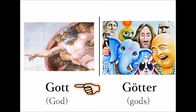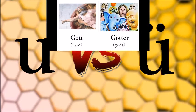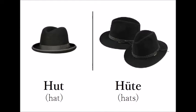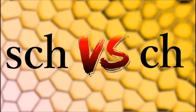U versus Ü. Bluten — Blüten. Blüten — Blüten. Hut — Hüte. Hut — Hüte.